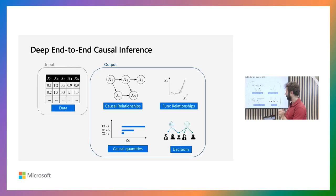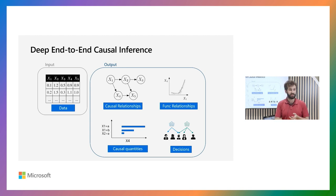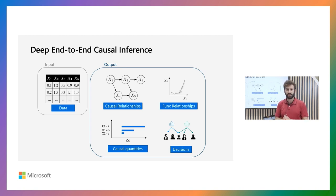To conclude: we have this deep end-to-end causal framework where we take observational data as input, learn the causal relationships from that data as well as the functional relationships modeled as deep neural networks. Using both, we can estimate causal quantities like average treatment effects, conditional average treatment effects, and also counterfactuals and individual treatment effects. Using that, we are making real-world decisions to help people understand the scenarios they're working in.